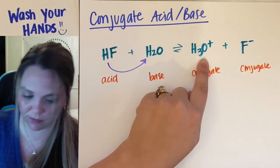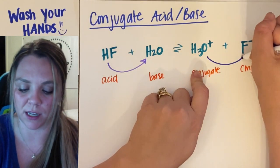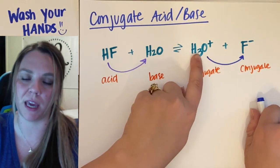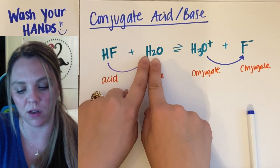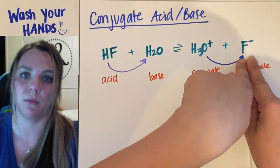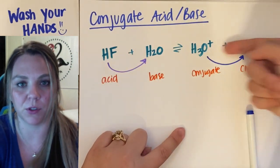Let me grab a different color. So H3O+ is going to donate its hydrogen back to fluorine. Which would make H3O+, he's getting rid of a hydrogen, it would make that go back to water. And the fluoride ion, when he gains that hydrogen, becomes HF. So that's my forward and my reverse reaction.